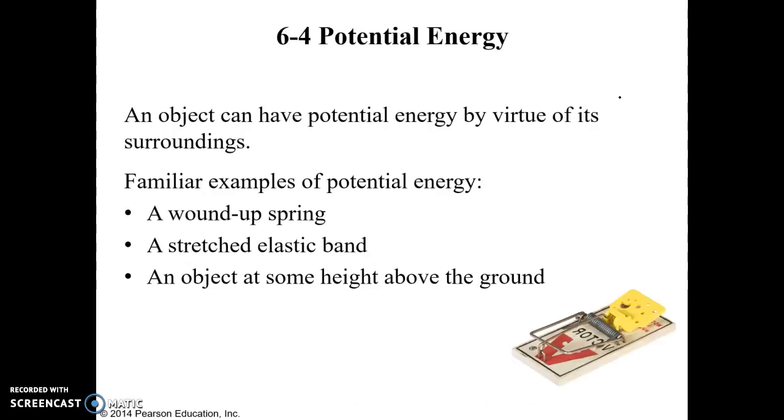Moving on from kinetic energy, our next type of energy we're going to discuss is potential energy. So potential energy is essentially energy that is stored up and can be used at a later point in time. Some examples of those would be a wound up spring like the spring in this mousetrap, a stretched out rubber band like you might have a slingshot, or just simply moving an object at some height above the ground. Moving it up into the air gives it gravitational potential energy.